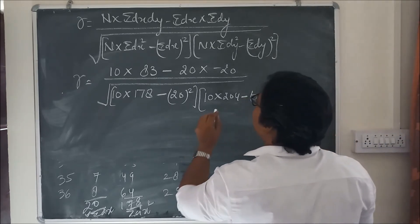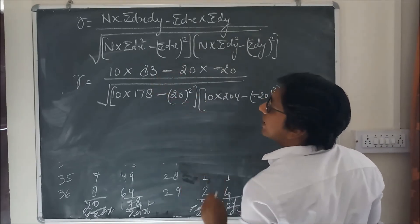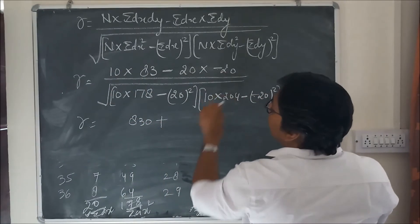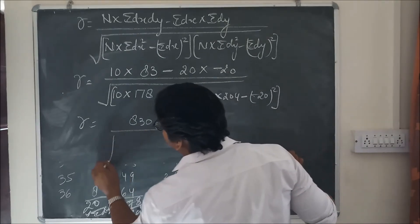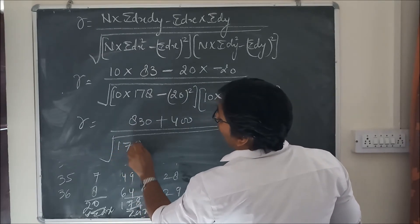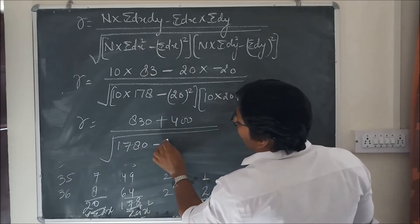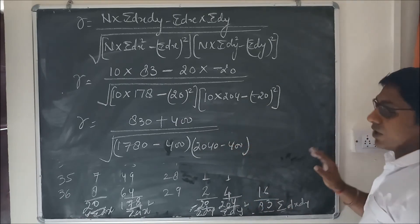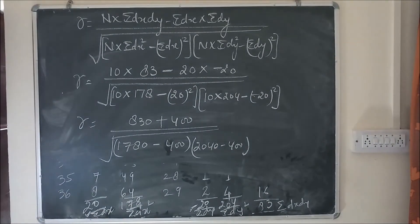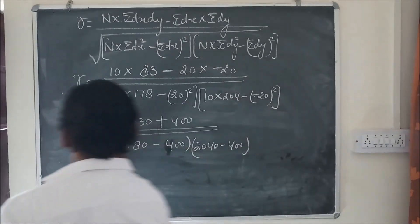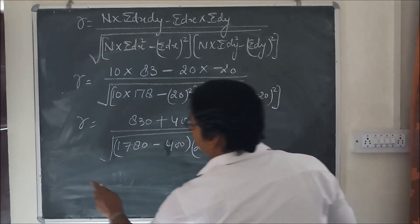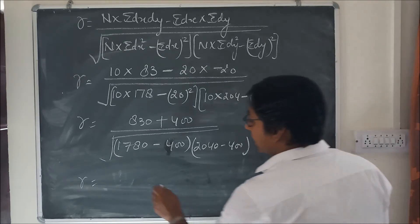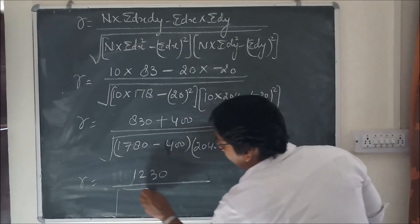We need to be careful with the signs: minus into minus becomes plus. So r equals 10 into 83, which is 830, plus 20 into 20 which is 400, giving 1230 in the numerator. The denominator is under root of (10 into 178 minus 20 squared) into (10 into 204 minus 20 squared), which gives under root of (1780 minus 400) into (2040 minus 400) = under root of 1380 into 1640.